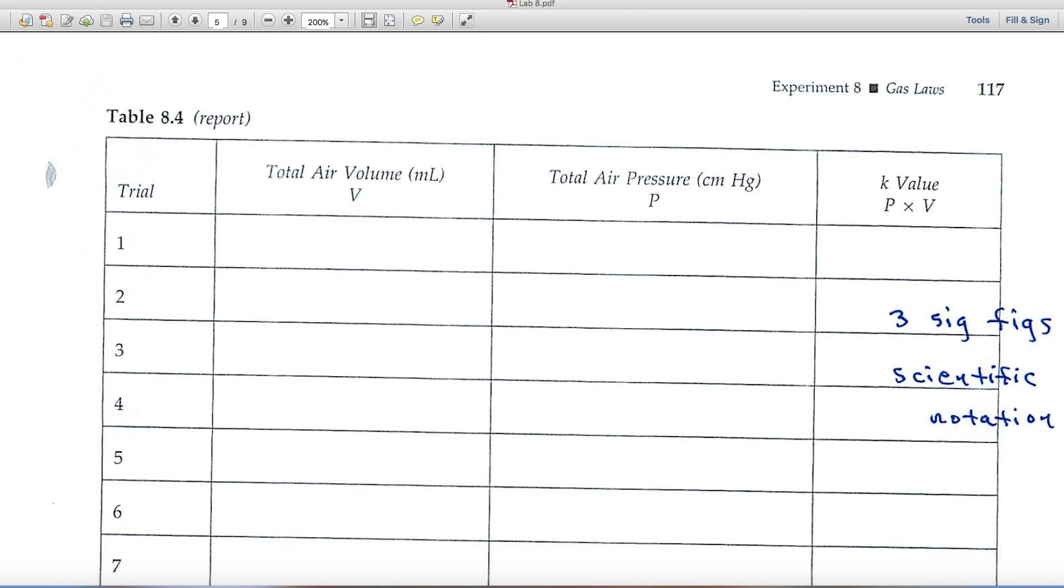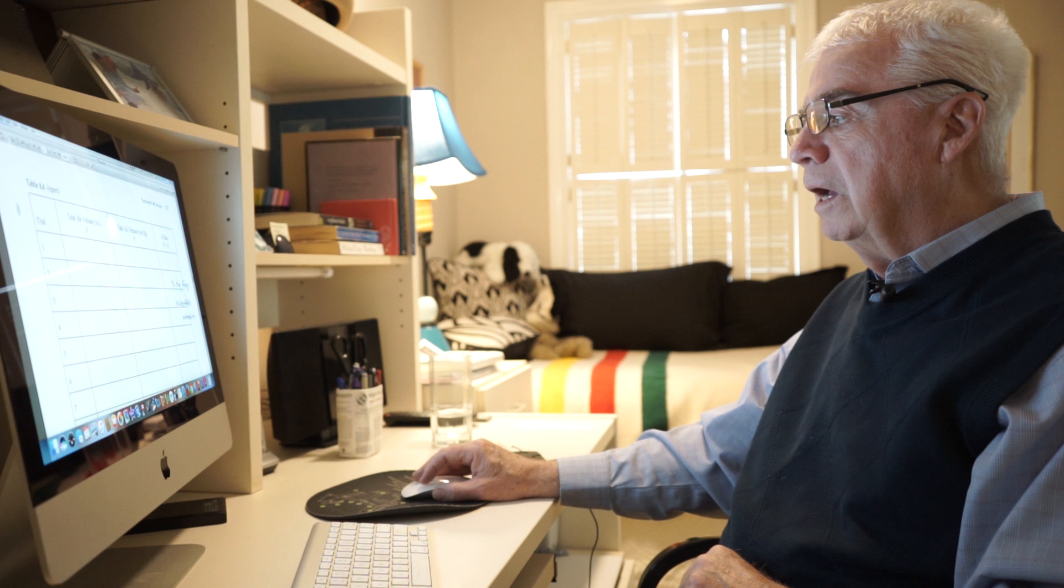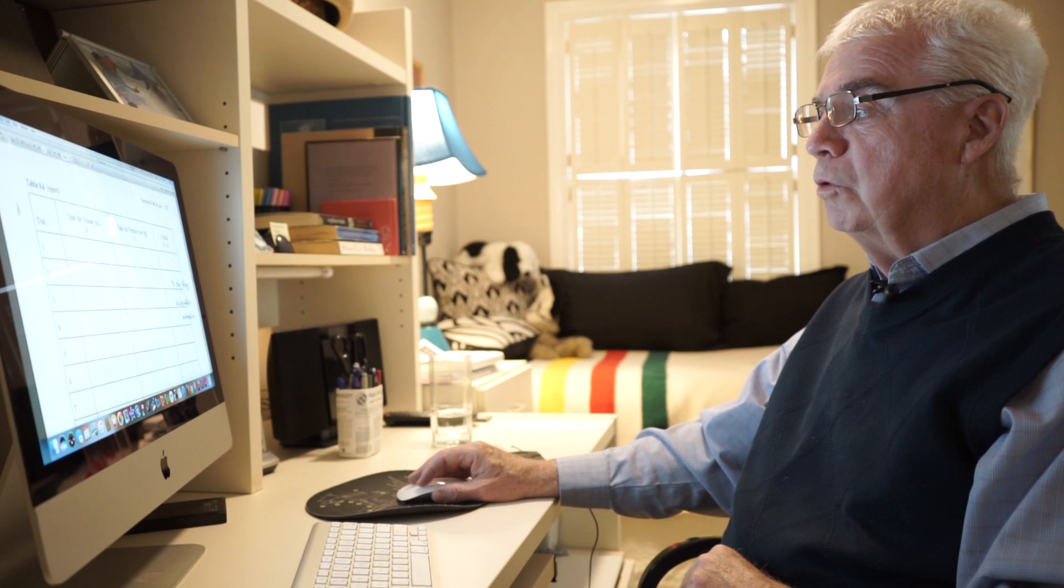Table 8.4, gathering data on pressure and volume, you'll multiply those two together. And when you get the product, you'll find that the answer is over a thousand. In other words, there are at least four digits in the answer and probably more.